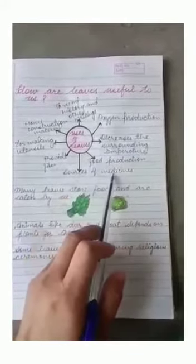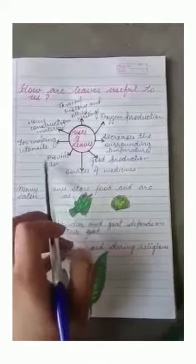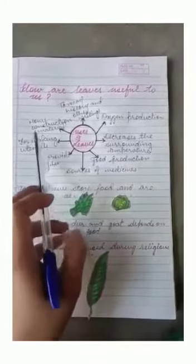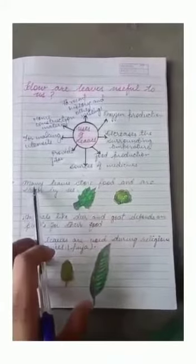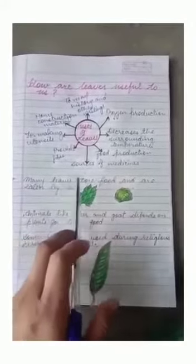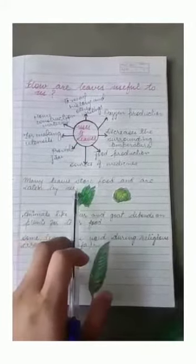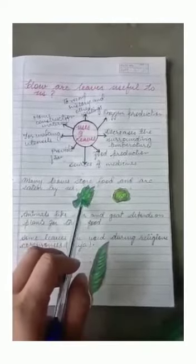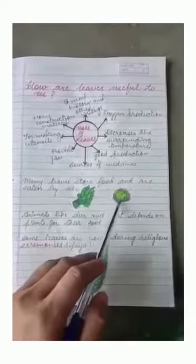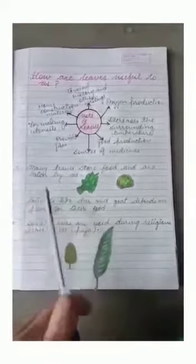Let's read in detail. Many leaves store food and are eaten by us. For example, leaves of spinach, cabbage and lettuce. Animals like deer and goat depend on plants for their food.